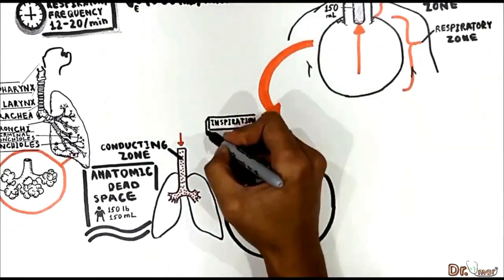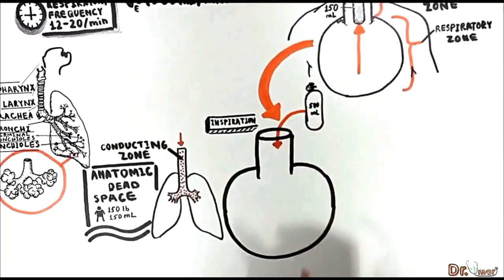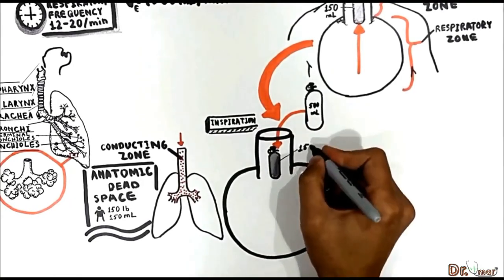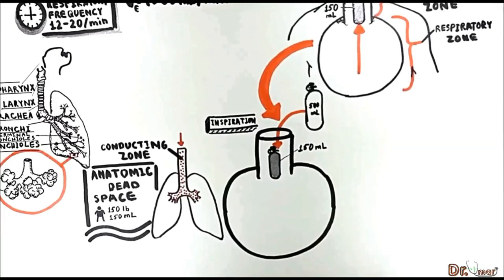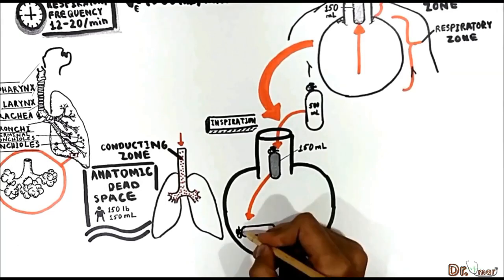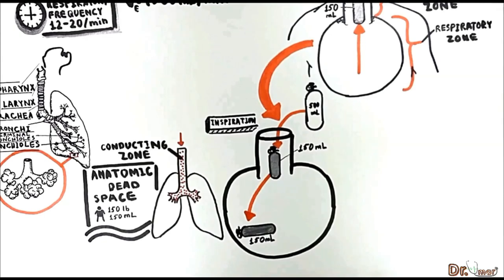During inspiration, when a person breathes in the tidal volume of 500 mils, the anatomical dead space already has 150 mils of air. The first 150 mils of air to reach the alveoli comes from the anatomic dead space — not from the inspired tidal volume. This is the air that remained in the dead space at the end of expiration and has the same composition as alveolar gas.